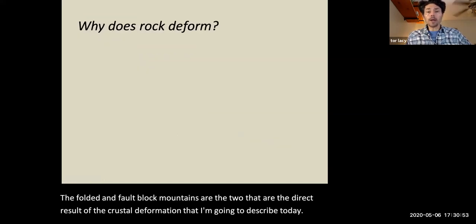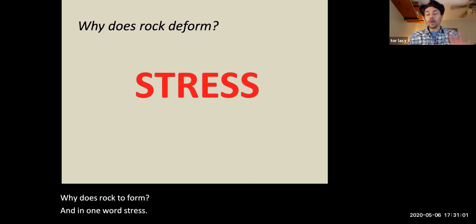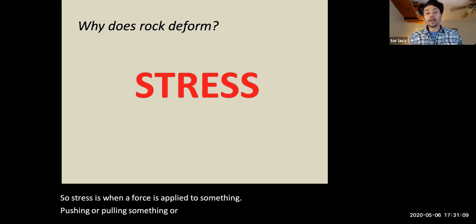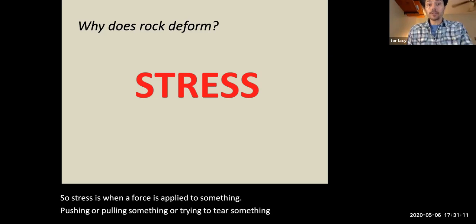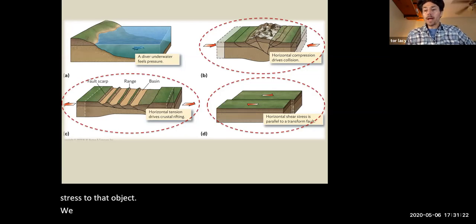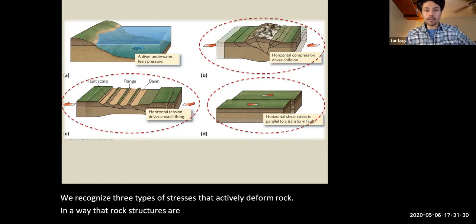So why does rock deform? And in one word, stress. So stress is when a force is applied to something. Pushing or pulling something or trying to tear something is applying a stress to that object. We recognize three types of stresses that actively deform rock in a way that rock structures are formed.